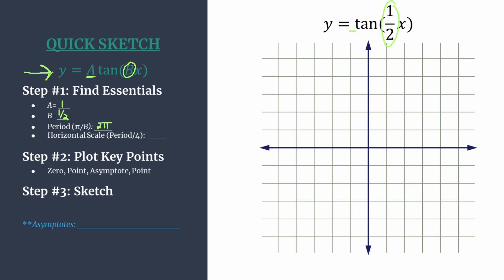Once I get my period I like to divide it by four and use that as the horizontal scale. And this just ensures each of the key points in step two line up nicely with a horizontal tick mark. Makes for a nice clean graph. Two pi divided by four reduces to pi over two and that's how we'll count on our horizontal axis.